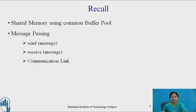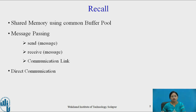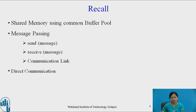There must exist a communication link between the processes to send and receive a message. One example of inter-process communication we studied is direct communication. Under direct communication, the processes which wish to communicate with each other must name the recipient and the sender. In a direct communication message passing system, sender and receiver must know each other.